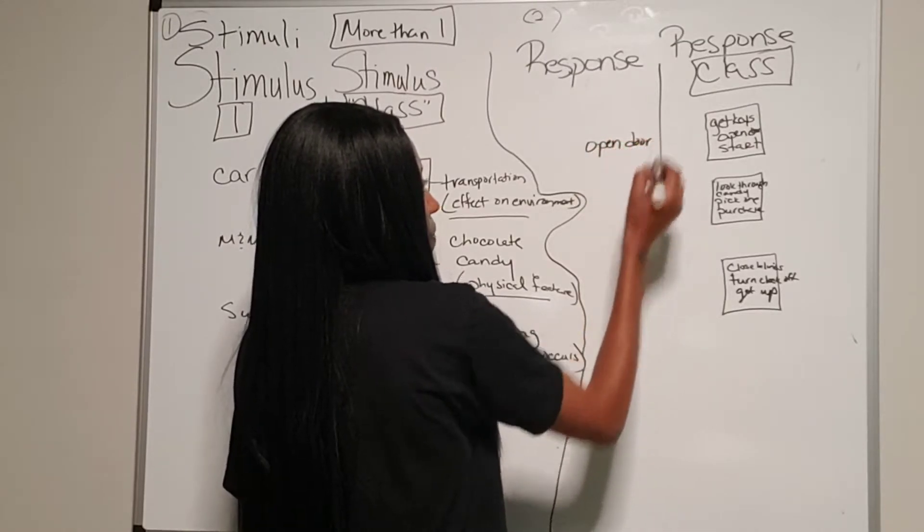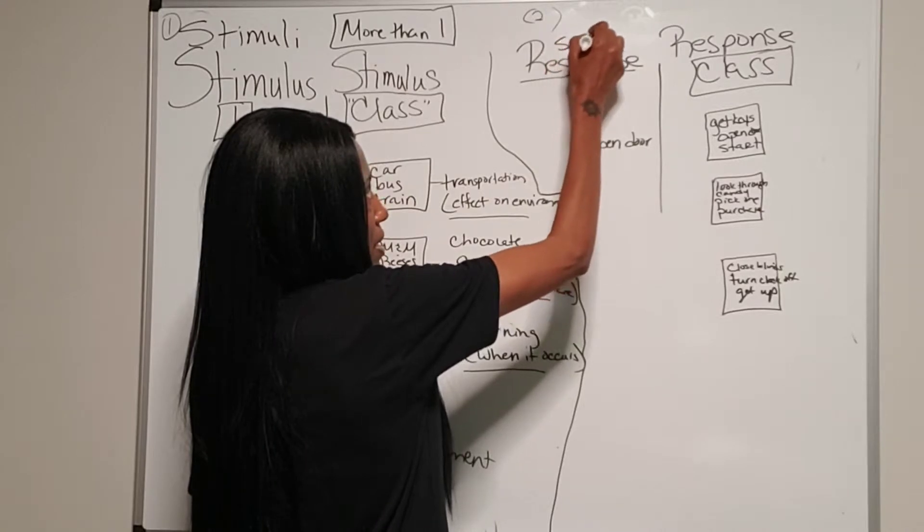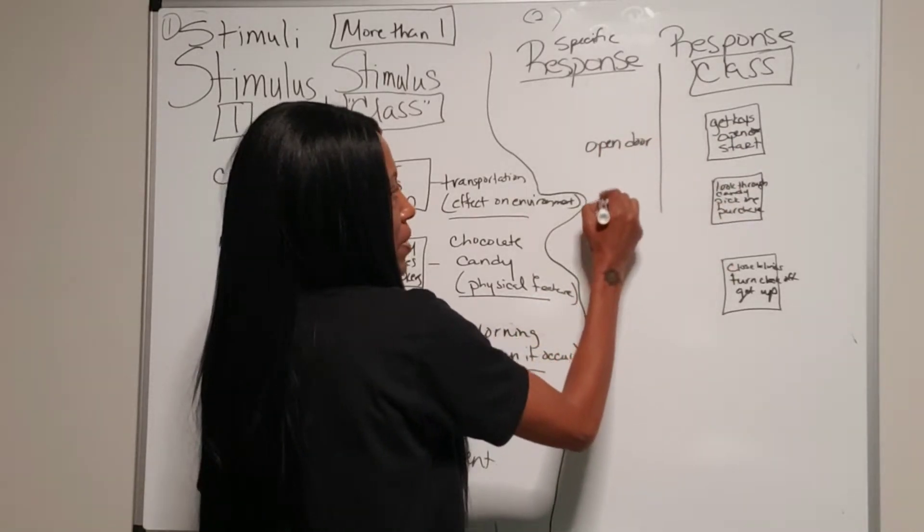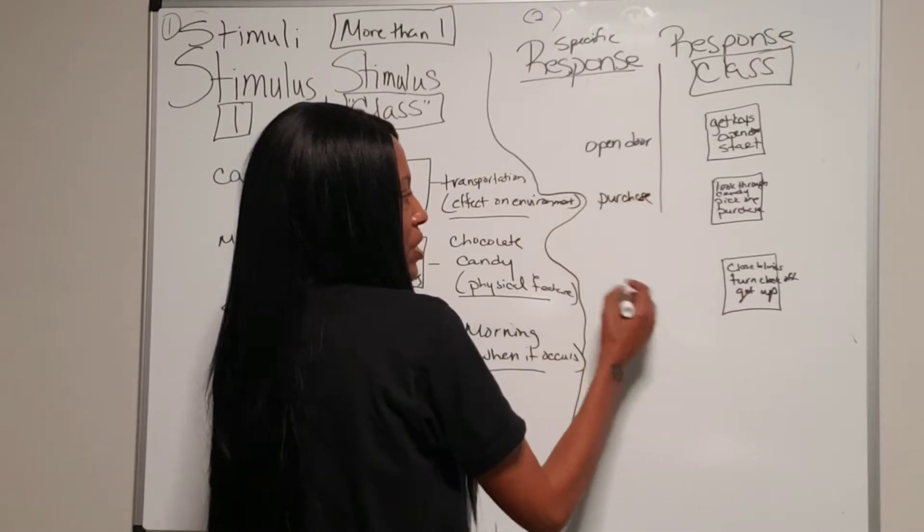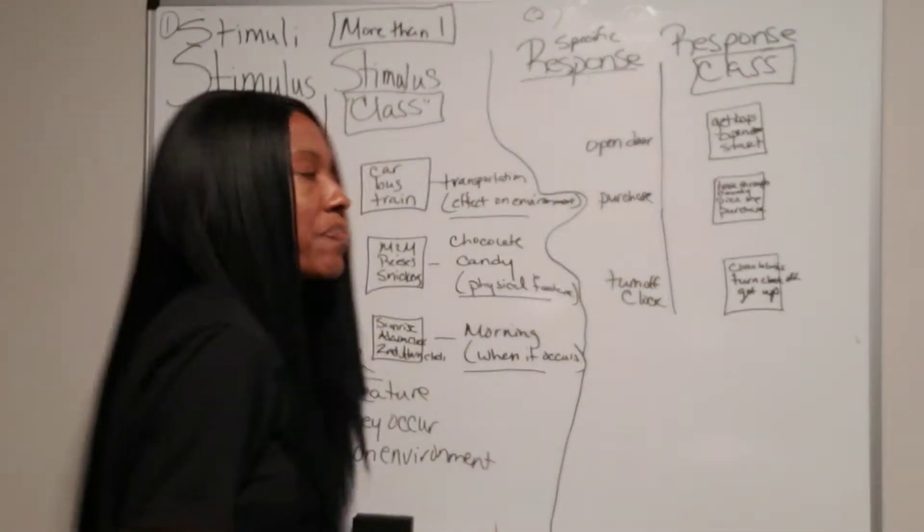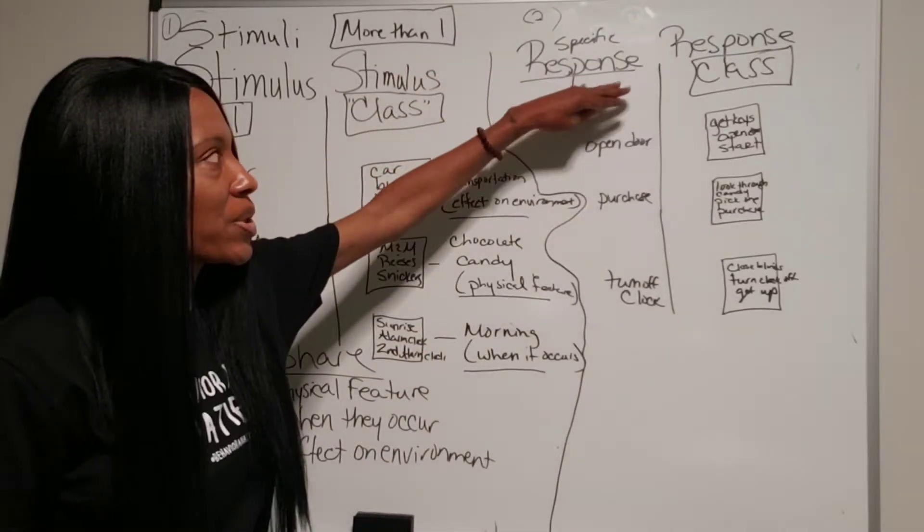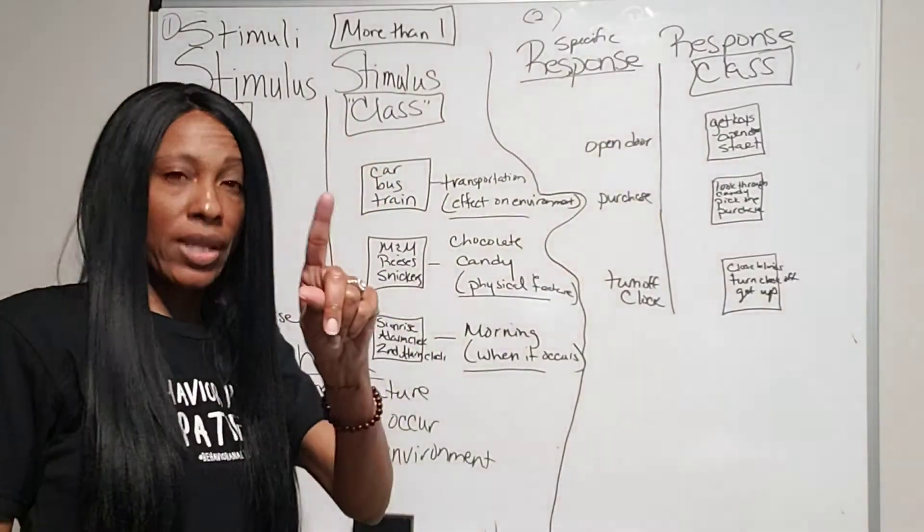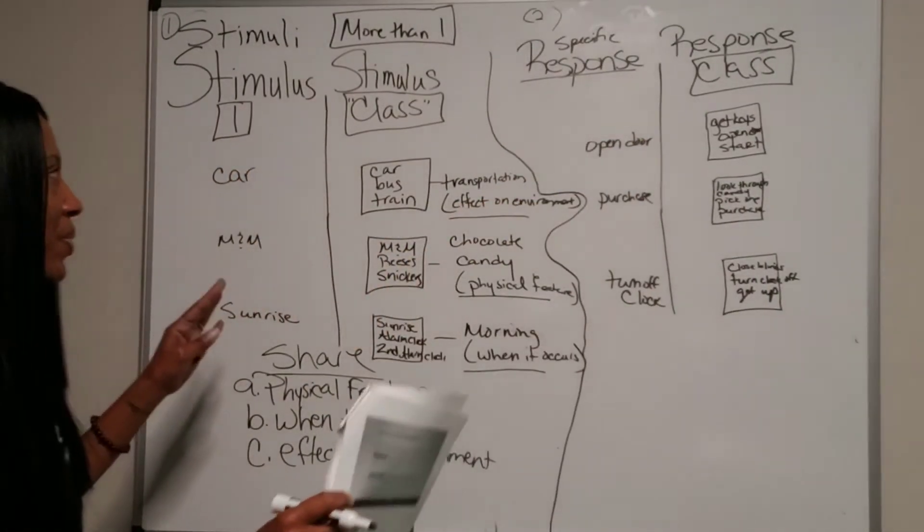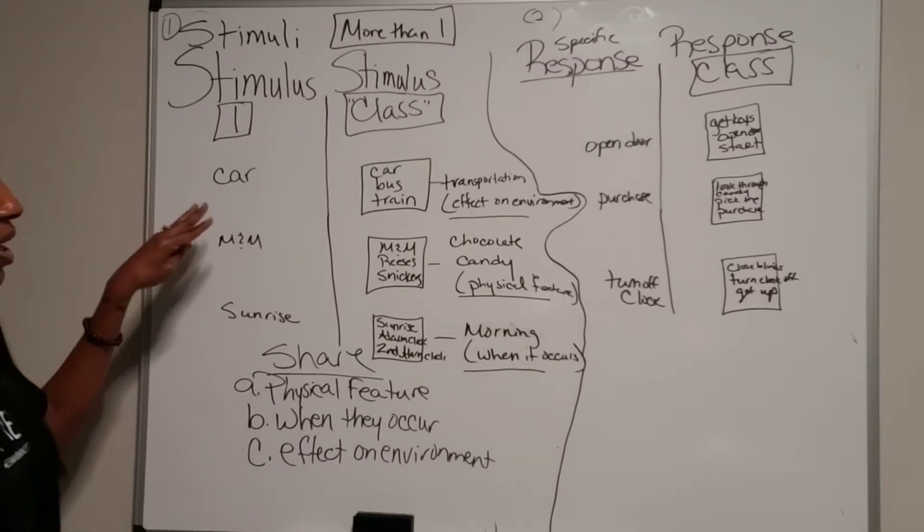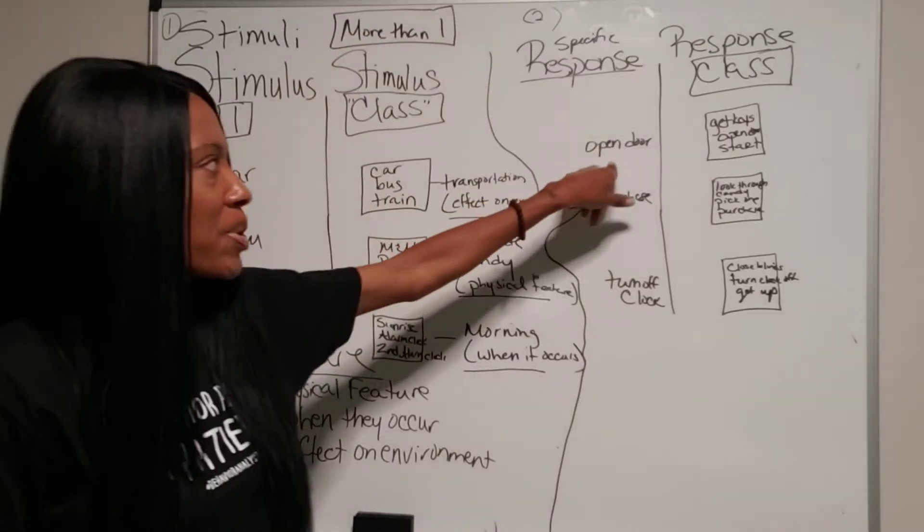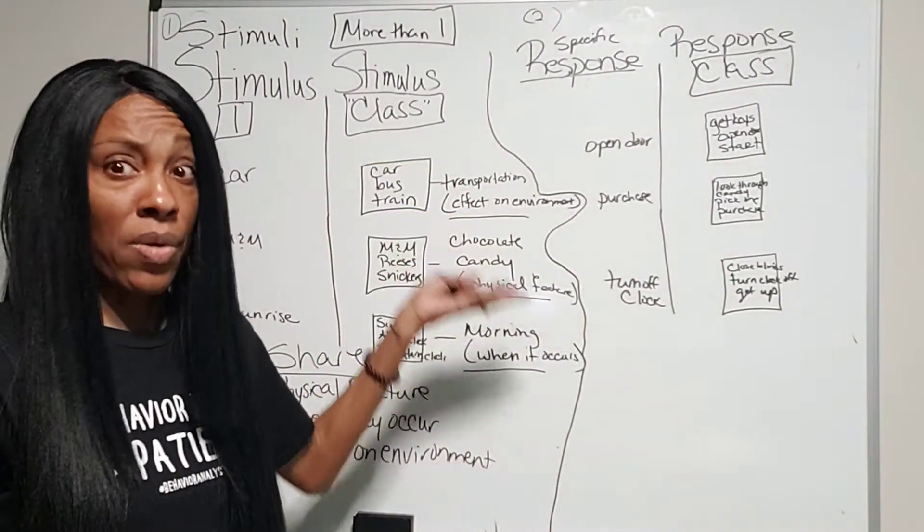So here, again, if we take one out, we're only talking about a specific response instead of a class of responses. So here, we'll take open door out. Here, purchase. And here, turn off clock. So it's the same thing. Response, when you see just response by itself, it's one. If you see response class, you should be looking for multiple responses.